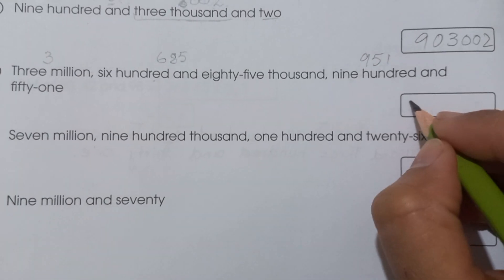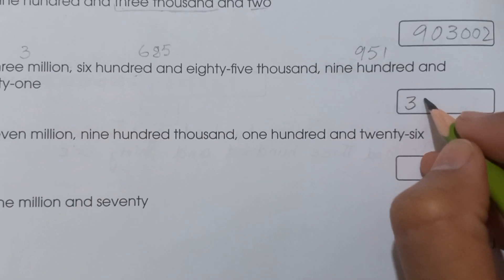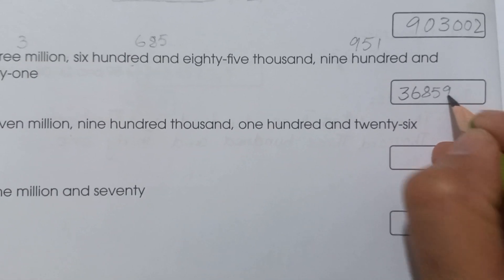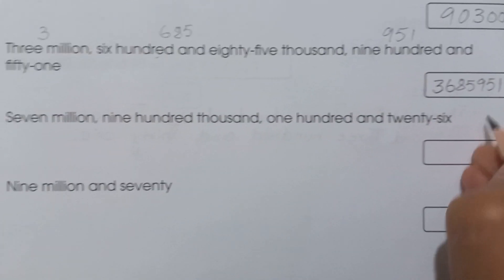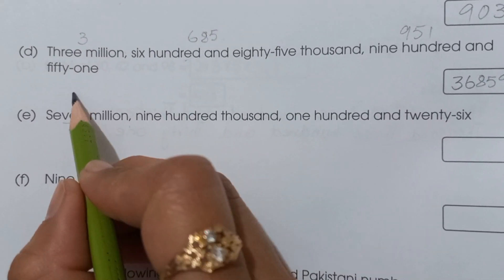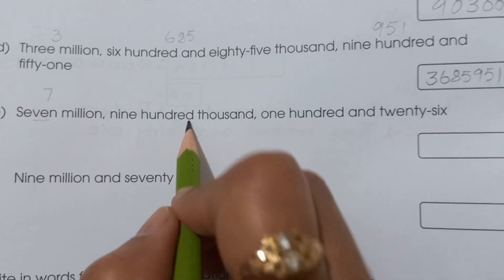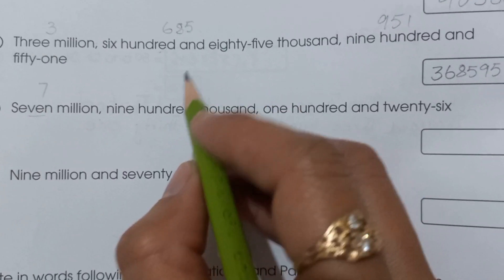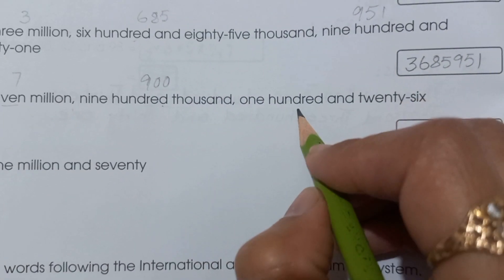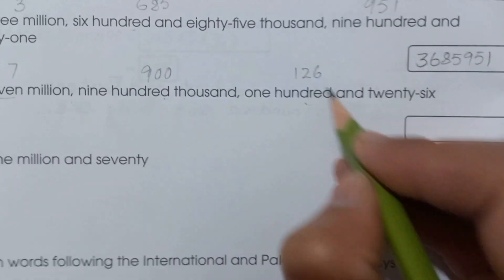Part (e): seven million, nine hundred thousand, nine hundred and twenty-six. So we write: 7,900,926.